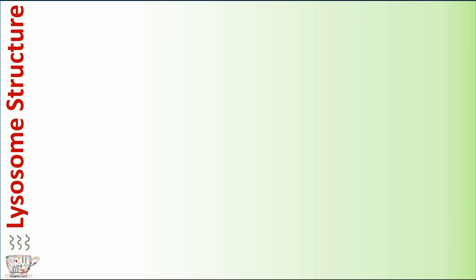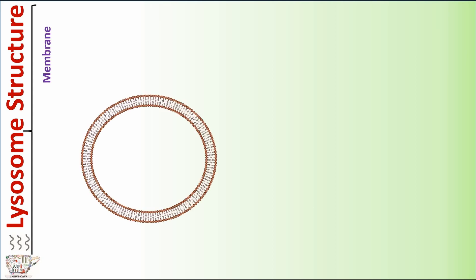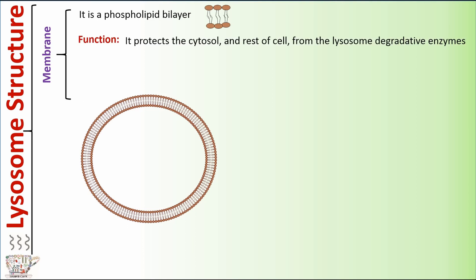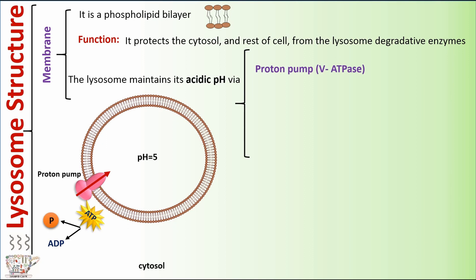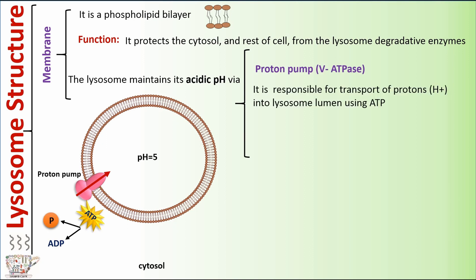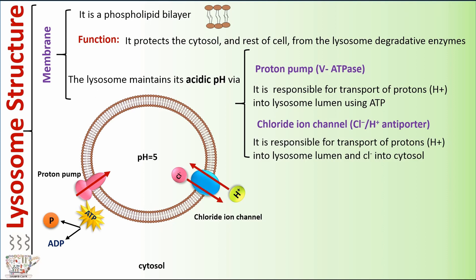Lysosome structure. Lysosome has two parts in its structure. The first part is the membrane. The lysosome membrane is a phospholipid bilayer. Its function is to protect the cytosol and the rest of the cell from the lysosome's degradative enzymes. The lysosome maintains its acidic pH via a proton pump, or V-ATPase, that is responsible for transport of protons into the lysosome lumen using ATP, and a chloride ion channel.